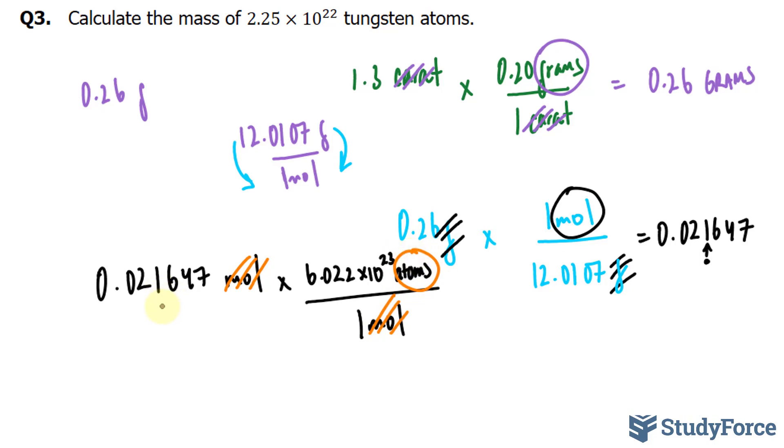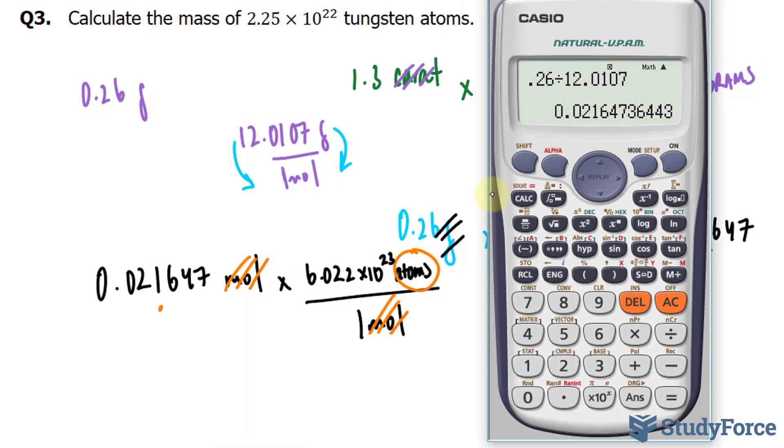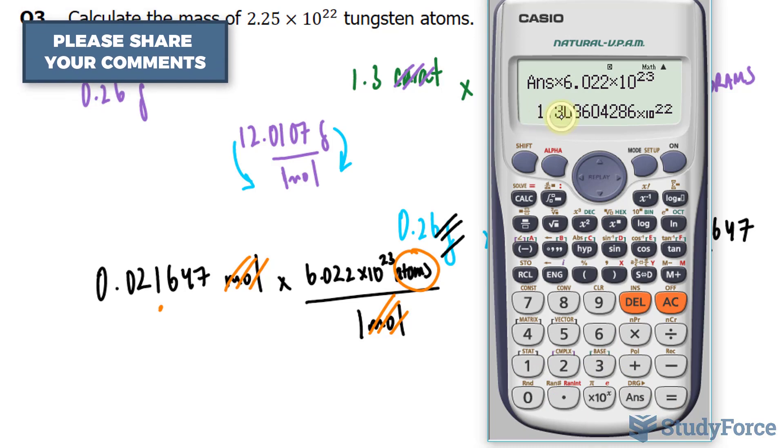Remember, we have to have a number with two significant figures. Using our calculator, I'll multiply this number by 6.022 times 10 to the power of 23. And I'll end up with 1.3 times 10 to the power of 22 atoms.